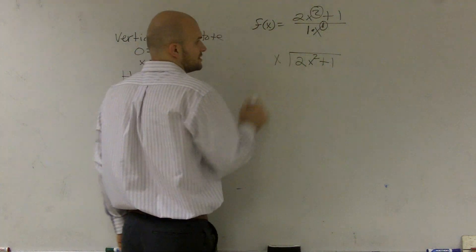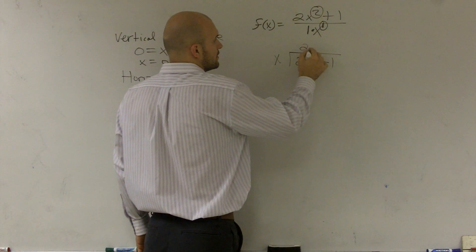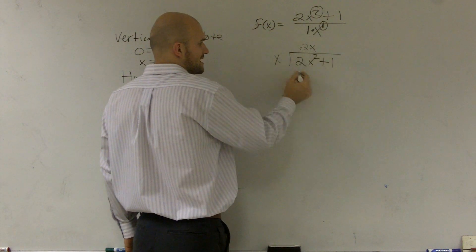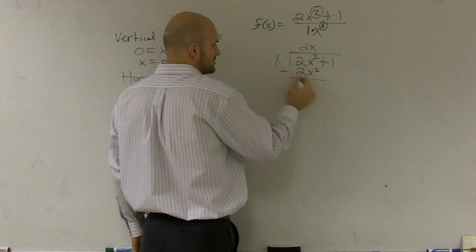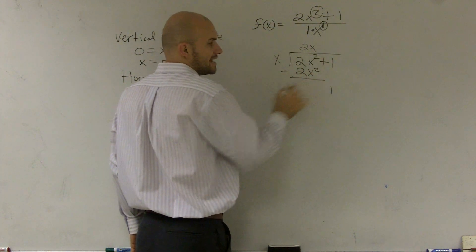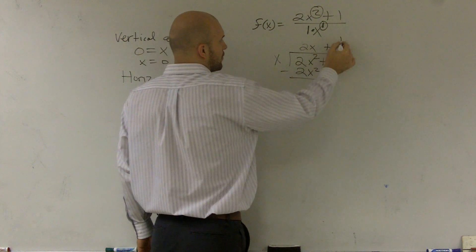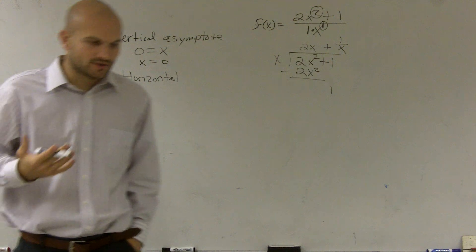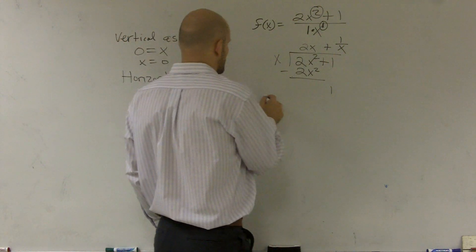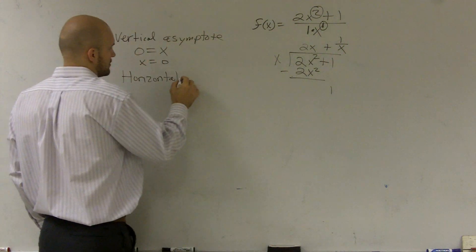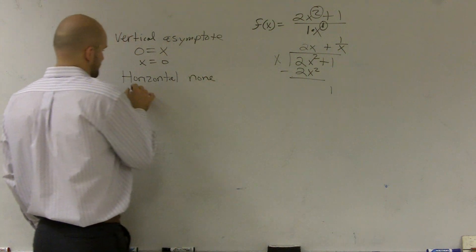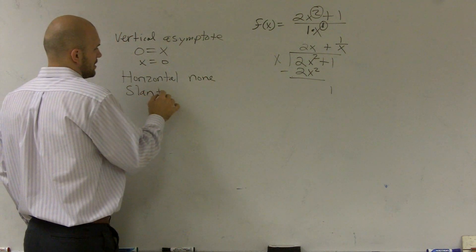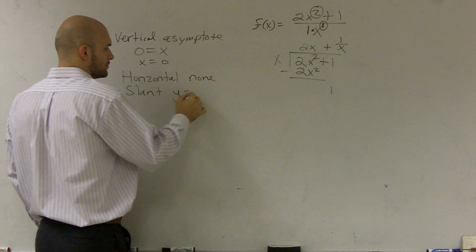So I say x goes into 2x squared 2x times. 2x times x is 2x squared. Subtract the 2. It gives me a 1. x does not go into 1. So I'm left with a 1 over x. Now, we're dealing with this. So therefore,